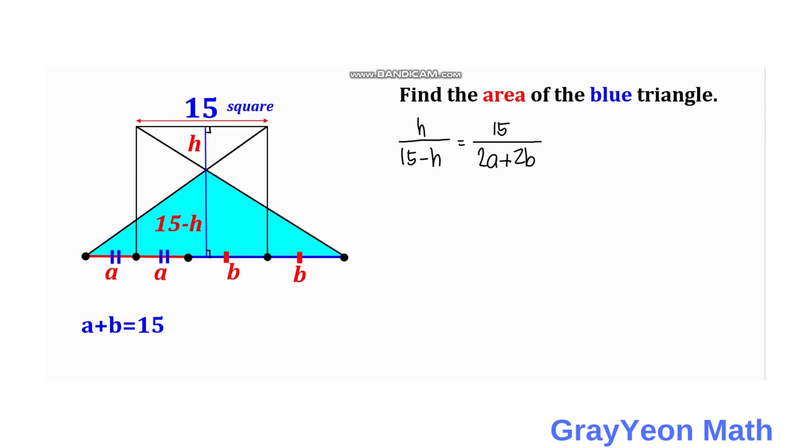But 2A plus 2B can be written as 2 times A plus B. But A plus B is actually 15, so 2 times 15, we have 30. 2A plus 2B is equal to 30.